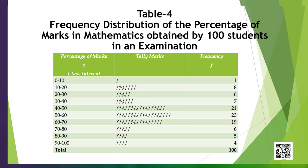A tally is put against a class for each student whose marks lie in that class. For example, if the marks obtained by a student are 57, we put a tally against the class interval 50 to 60. If the marks are 71, a tally is put against 70 to 80, and so on. If someone got 40 marks, the tally is put against 40 to 50 as per the rule. It helps in counting if four tally marks are put as bars slanting to the right and the fifth is shown by a bar slanting to the left, cutting across the earlier four bars. Thus, the frequency in any class is equal to the number of tally marks against that class.